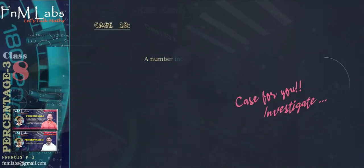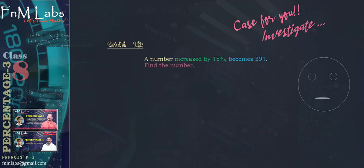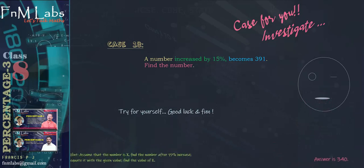And now a case for you to investigate. A number increased by 15% becomes 391. Can you find the number? Assume the number is x as we did in the previous example. Then find the number after a 15% increase. Now equate this with the given value and from the equation you get, find the value of x. The answer is 340. Try for yourself. Good luck and fun.